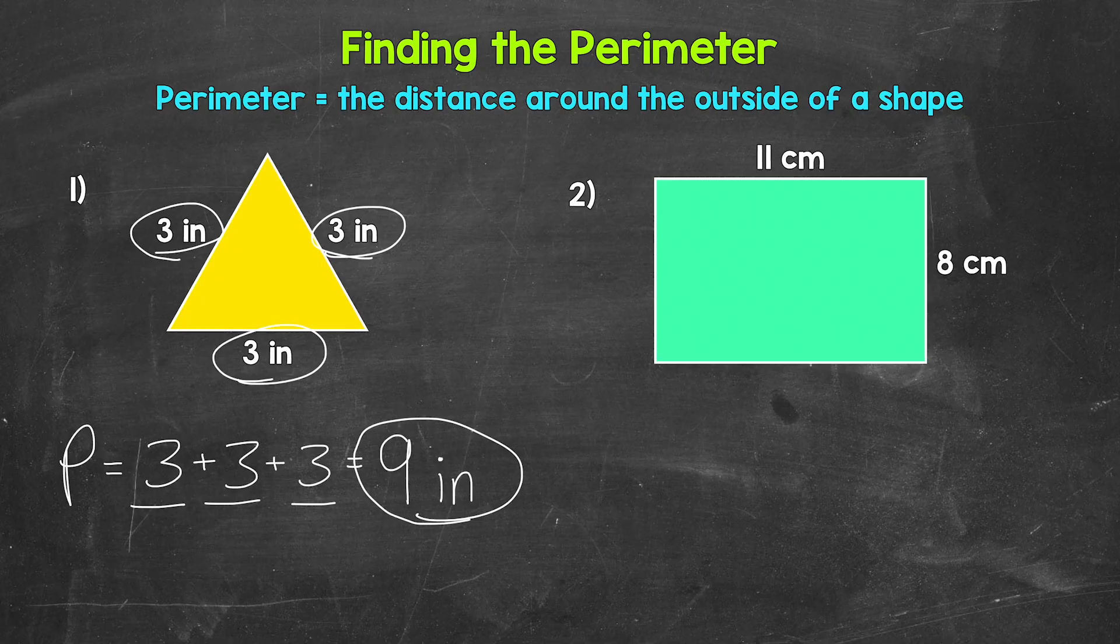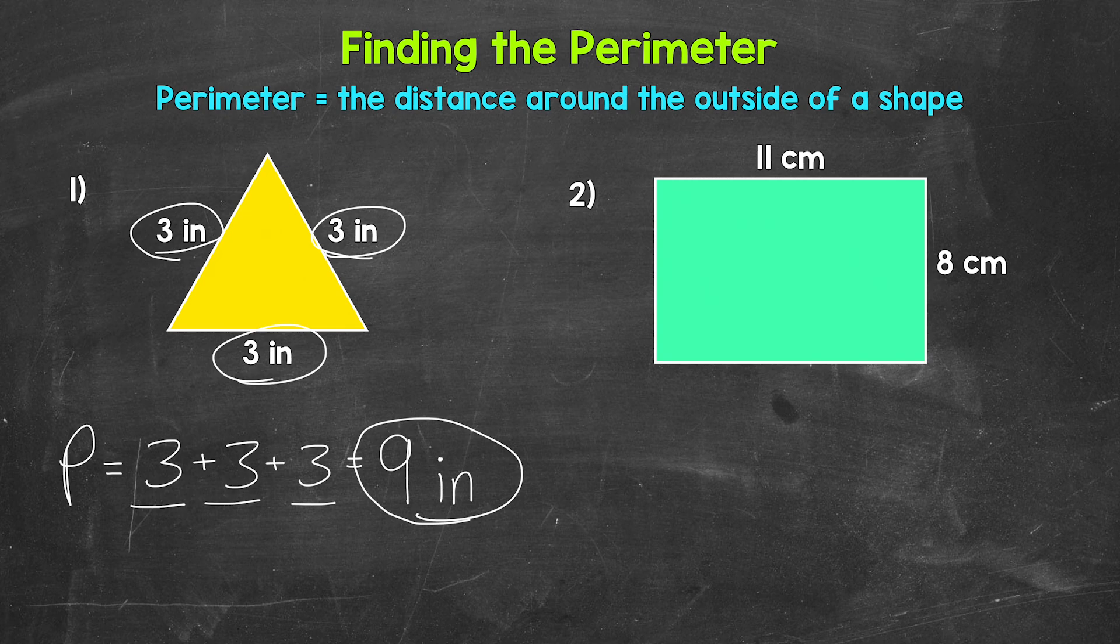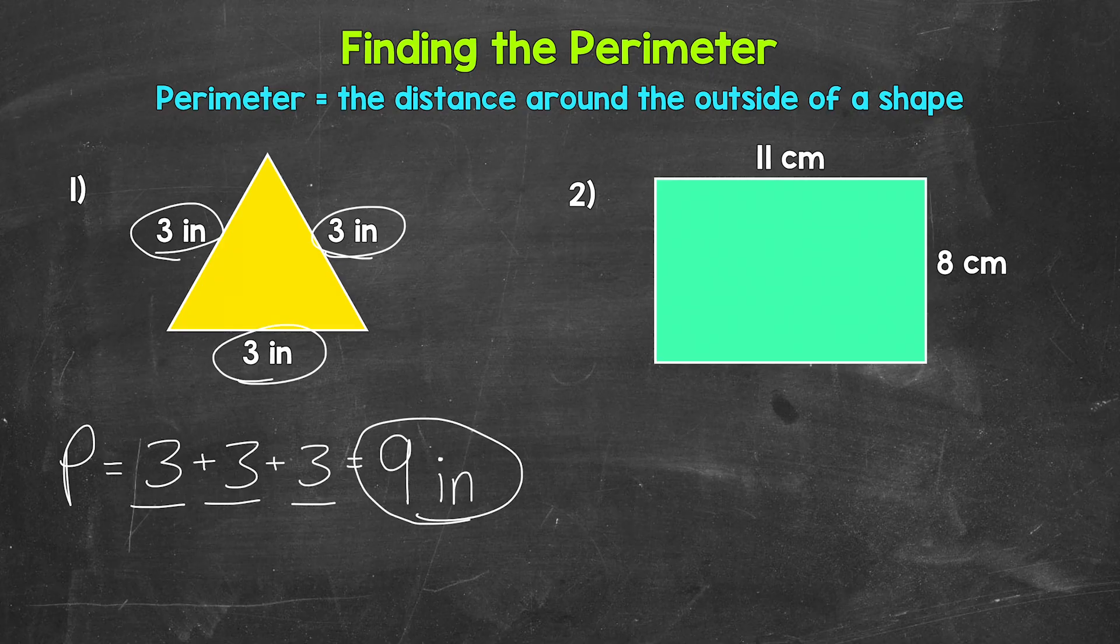Let's move on to number two, where we have a rectangle. Now here we can see that the rectangle has four sides, but only two are labeled. So keep in mind, we need to add all four side lengths to find the perimeter. We can't just add the two side lengths that are given. That will not give us the total distance around the outside of the shape. We need all four side lengths. So what we can do to make sure we add all four side lengths is label all of the sides.